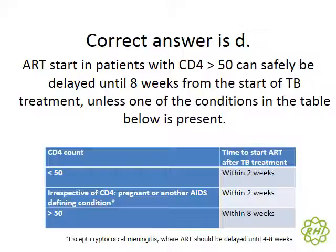We will risk the higher risk of IRIS to ensure she gets onto ARVs as soon as possible within pregnancy. Other conditions requiring early ARVs include patients with an AIDS-defining condition. The only exceptions are very sick patients with cryptococcal meningitis or TB meningitis, where we delay ART for at least four to eight weeks because IRIS in those patients carries a very high mortality.